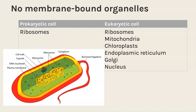Starting with no membrane-bound organelles — to keep this as a comparison, I've listed here some of the organelles that you have in a eukaryotic cell. So eukaryotic cells will have ribosomes, as do prokaryotic cells, but prokaryotic cells won't have any membrane-bound organelles.